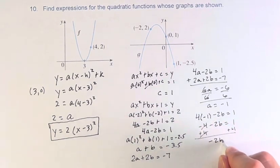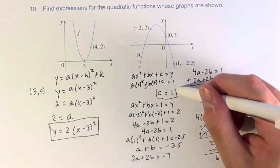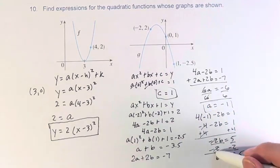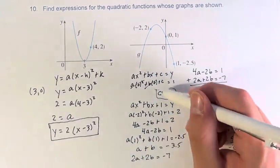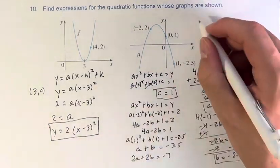We get negative 2b is equal to 5. Dividing by negative 2, b is equal to negative 2.5. So therefore, we know c, we know a, and we know b. So we can write our function, write it up here.